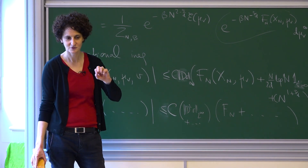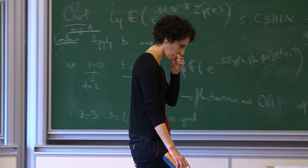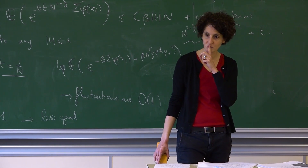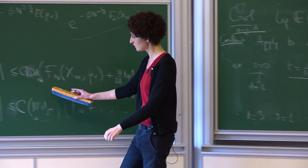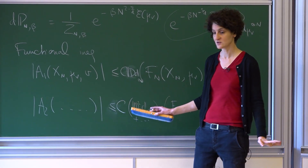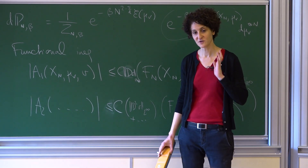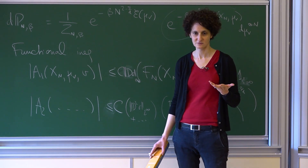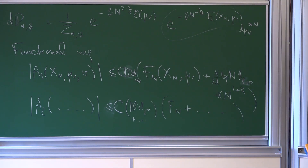[Question: You obtain this bound using functional inequalities which are not optimal?] The functional inequality is optimal as a functional inequality — I can find configurations that saturate it. But it's not optimal probabilistically. To get the optimal order in 3D, yes, but not to get the full CLT. If you want the convergence to the Gaussian, you need something more. This is the easy part; what this thing does for you is it allows you to complete the picture for the free energy expansion.